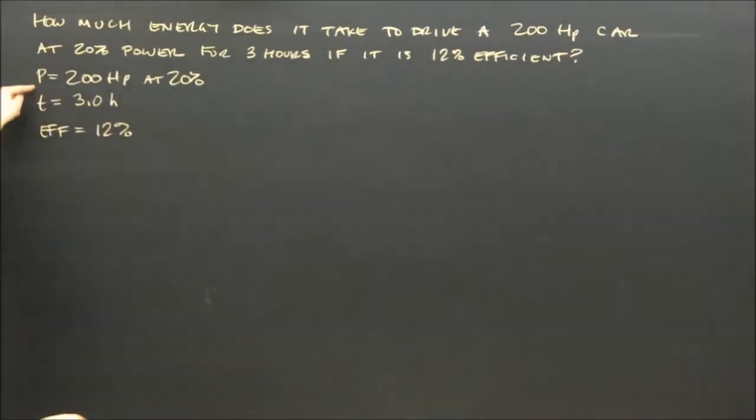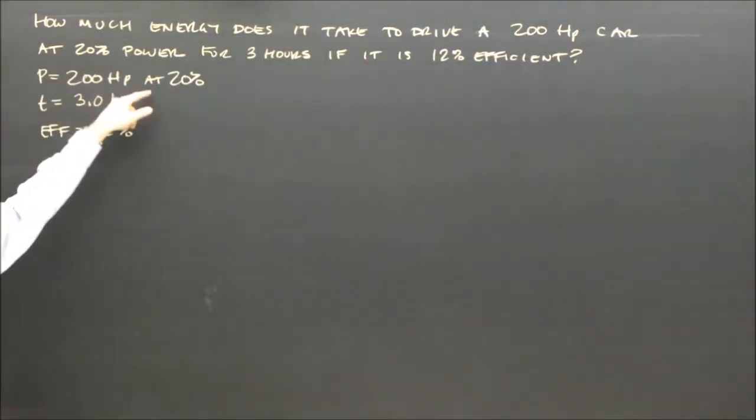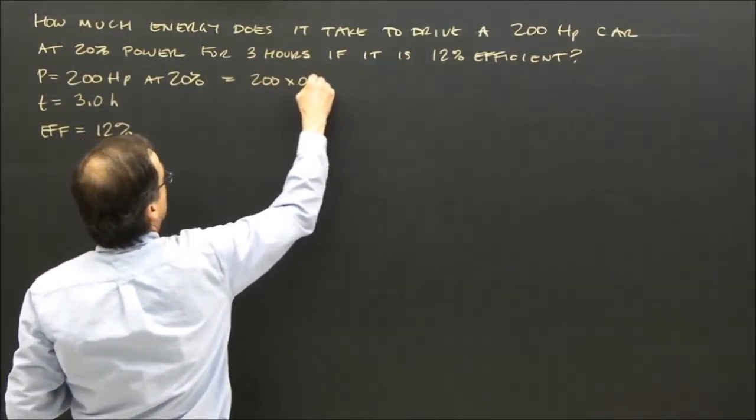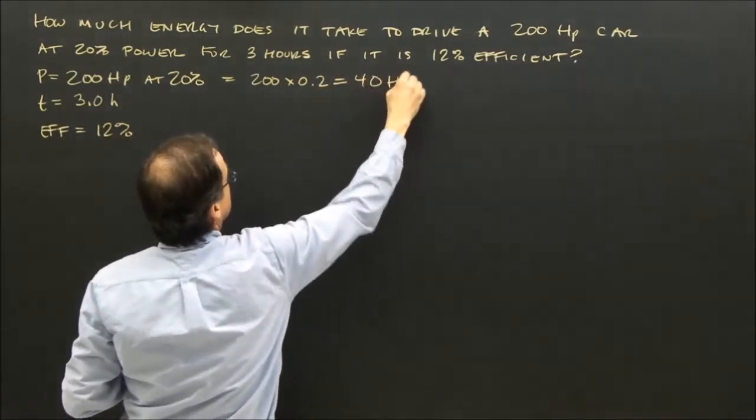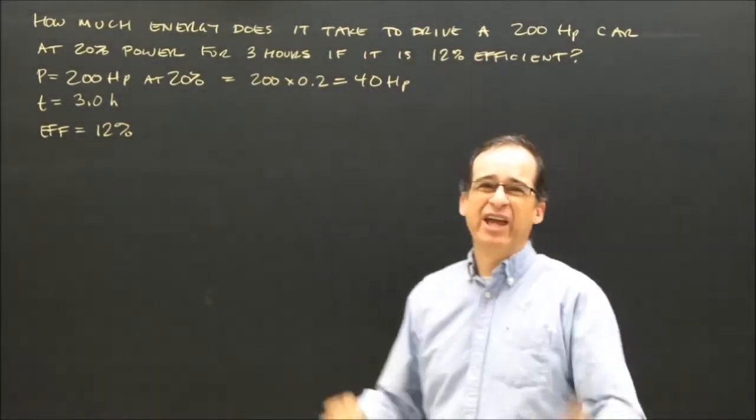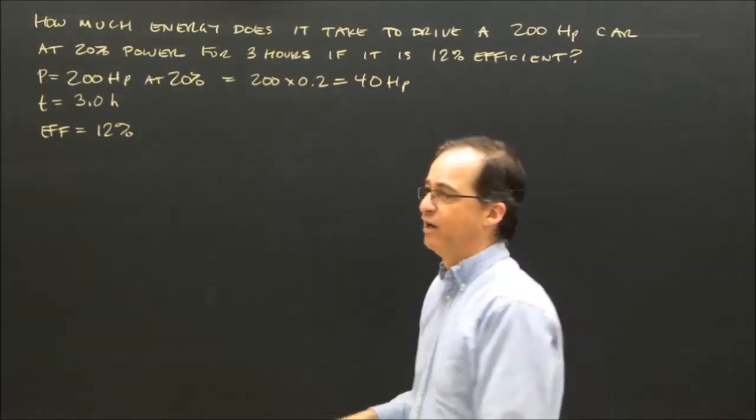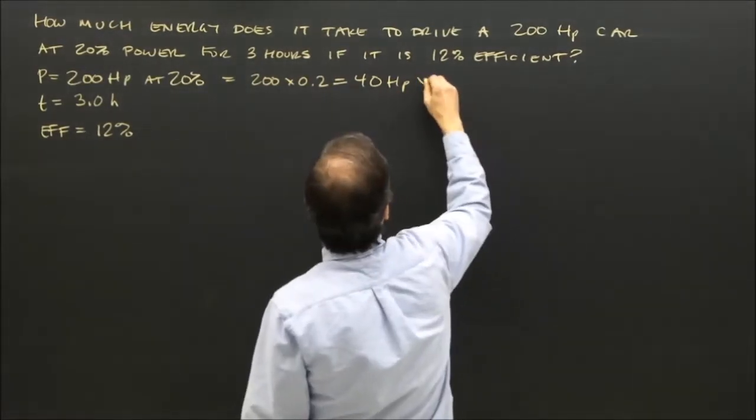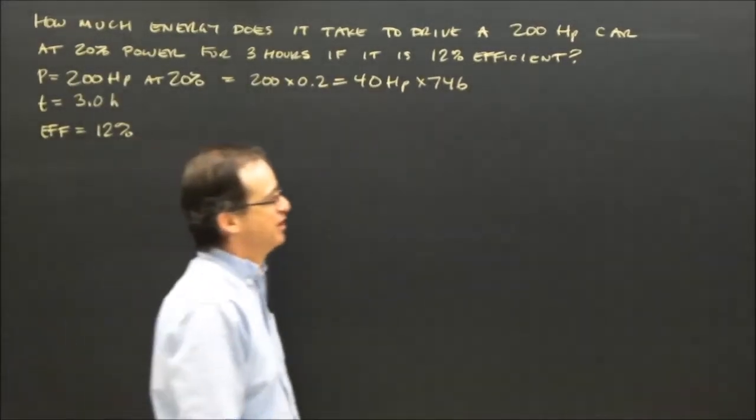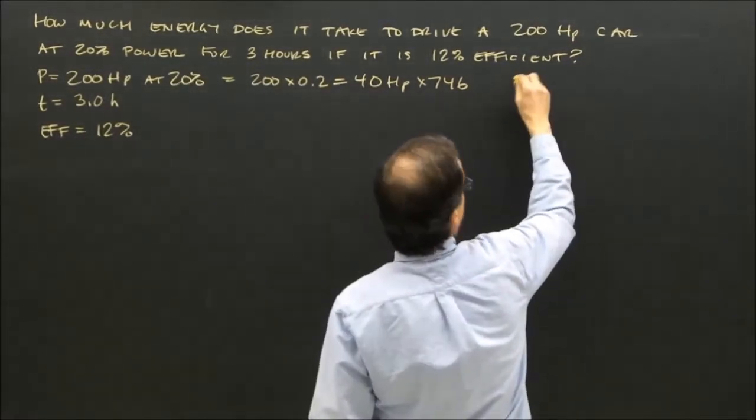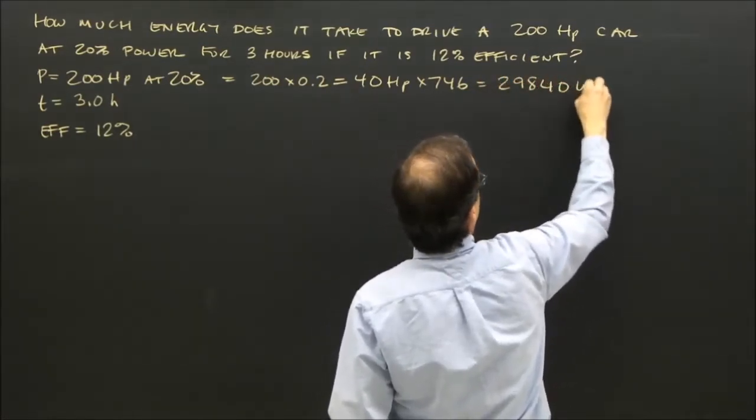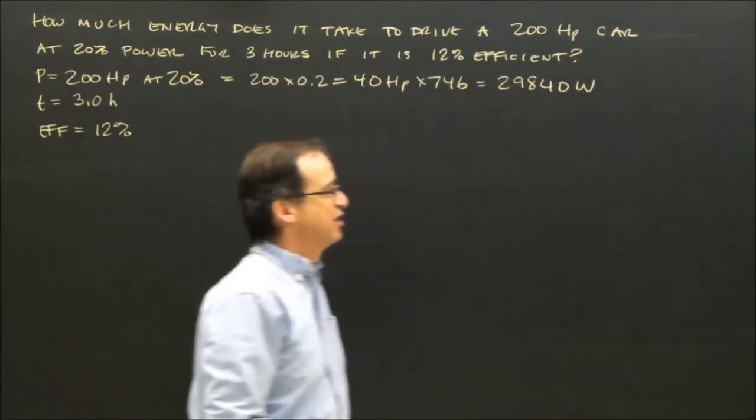Well, first we've got to look at our givens. Our power is 200 horsepower at 20%, so the power is really 200 times 0.2, which is 40 horsepower. That's all we're really using, 20% of the horsepower of the motor. But we can't use horsepower. We've got to use watts. So to change horsepower to watts, you multiply by 746. This is just a number that's a conversion factor. And you get that equals 29,840 watts.